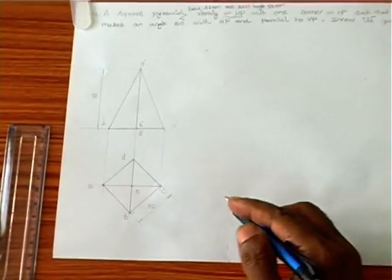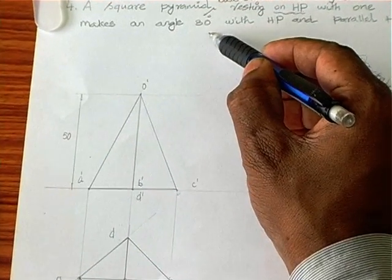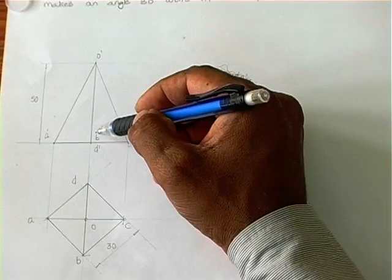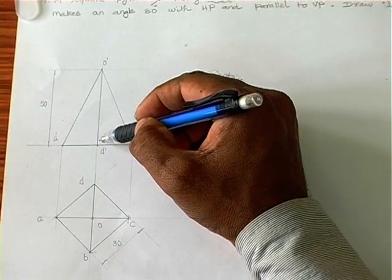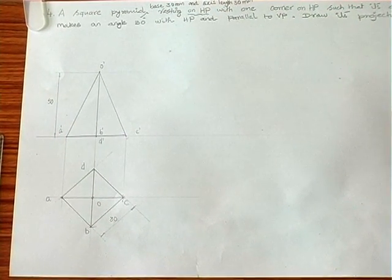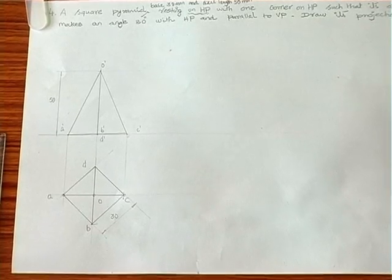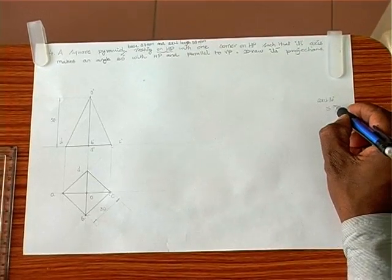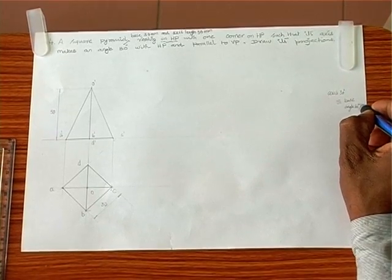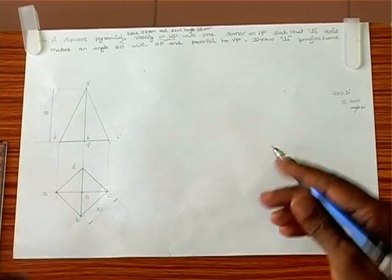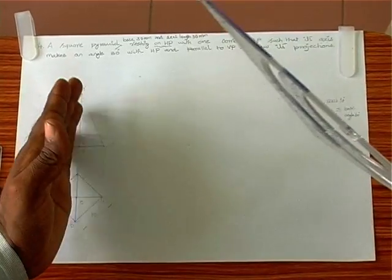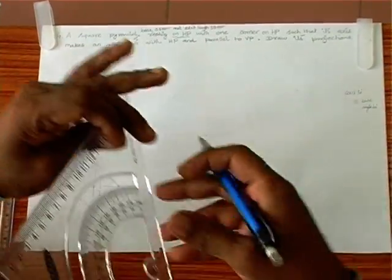In the next stage, the axis is inclined at 30 degrees to HP. Since the axis and the base are always at 90 degrees, axis angle 30 degrees is equivalent to base angle 60 degrees. So we draw a 60-degree line from the corner point, and then we can change the position of the square pyramid.